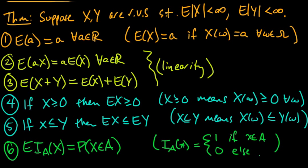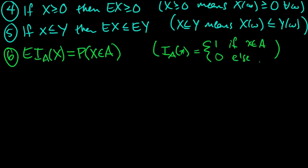Property 3 requires using joint distributions of random variables, which we haven't covered yet, so we don't quite have the tools to prove it. But properties 1, 2, 4, and 5 are pretty easy exercises in the case of discrete random variables and random variables with densities. This theorem holds in general for any random variables, but since we've only defined expectation for those two cases, you can take proving 1, 2, 4, and 5 as exercises. Property 6 is a bit more subtle.